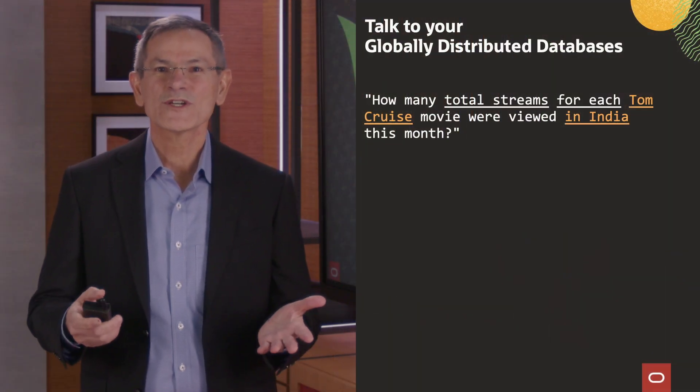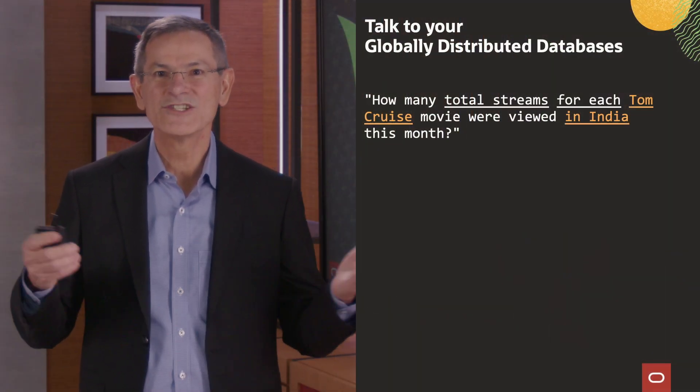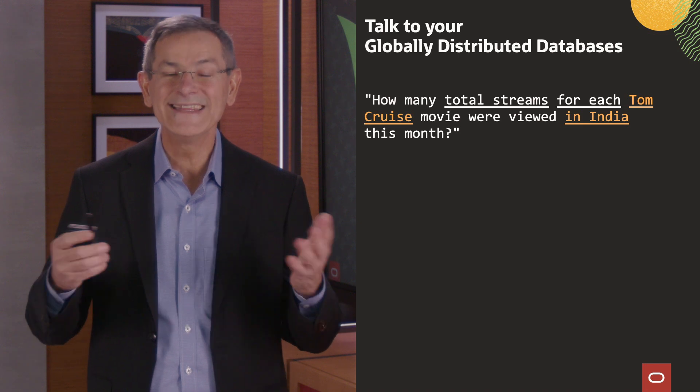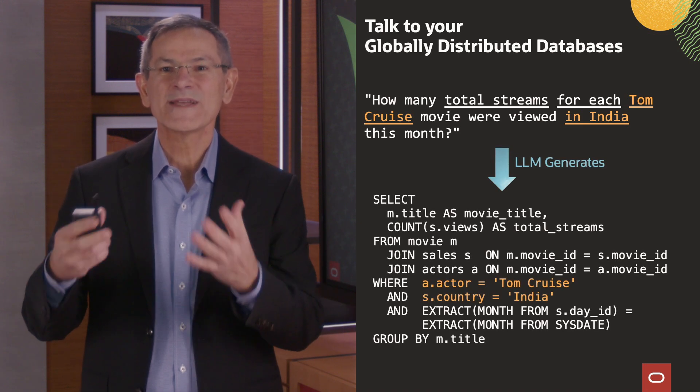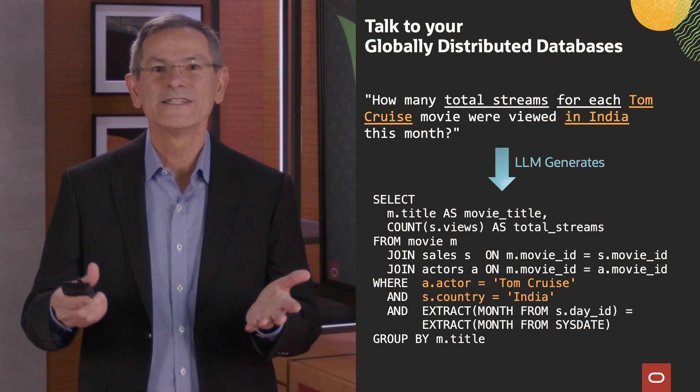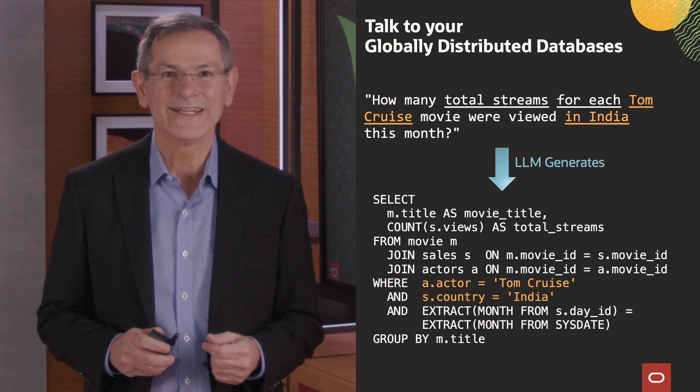Autonomous Database Select AI can translate natural language questions into SQL using an AI large language model. The SQL query is then automatically routed to the appropriate country or shard by the globally distributed database. For example, if a user asks a question like 'how many total streams for each Tom Cruise movie were viewed in India this month,' the LLM generates the SQL statement that specifies India, and the globally distributed database will automatically route that query to India.